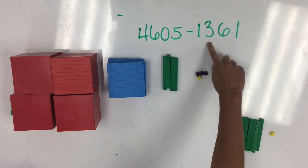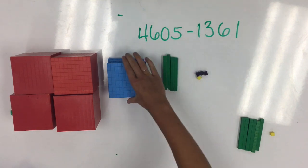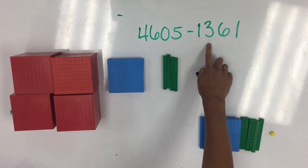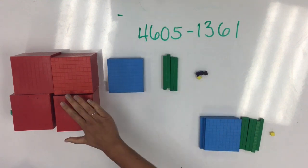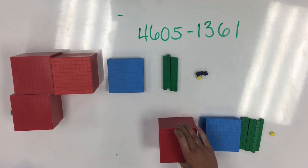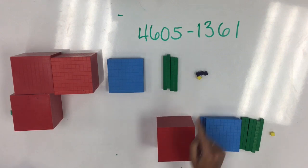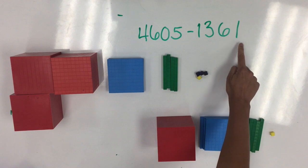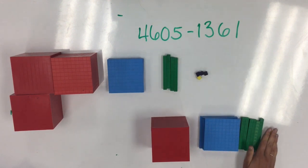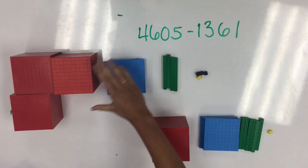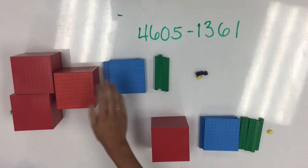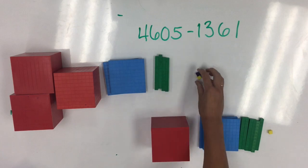Then, we move to the hundreds place to take away 3 hundreds. And finally, to the thousands place to take away 1,000. I can check that I've taken away 1,361, which leaves me with 3,244.